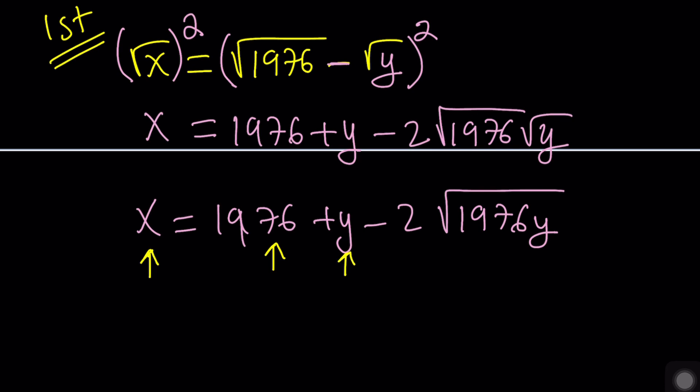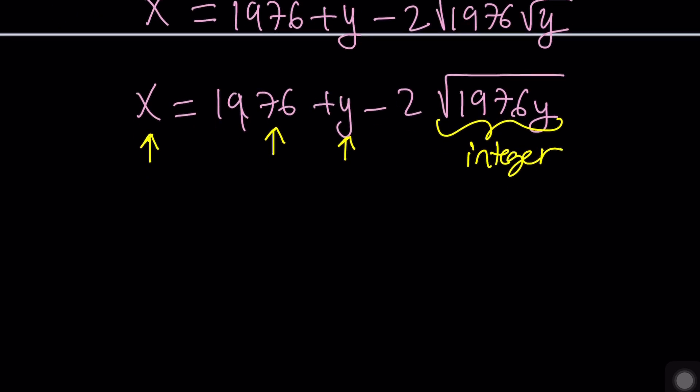How can that be an integer? Well if the expression inside is a perfect square then it'll be an integer. So we can set it equal to maybe z squared and that'll do the trick. But how can I make that thing a perfect square? Let's find out.